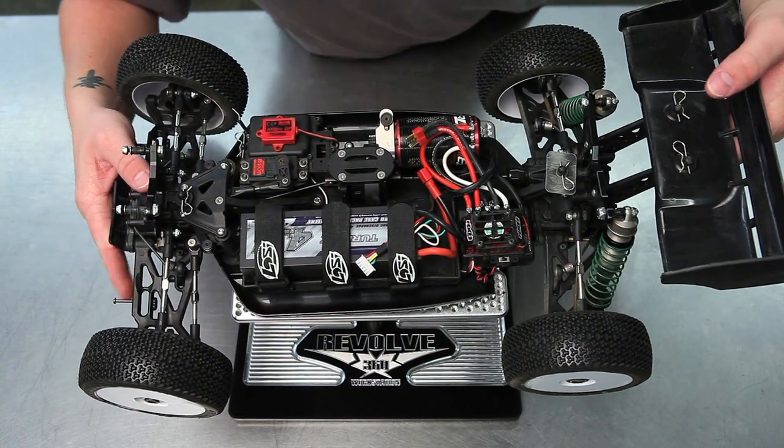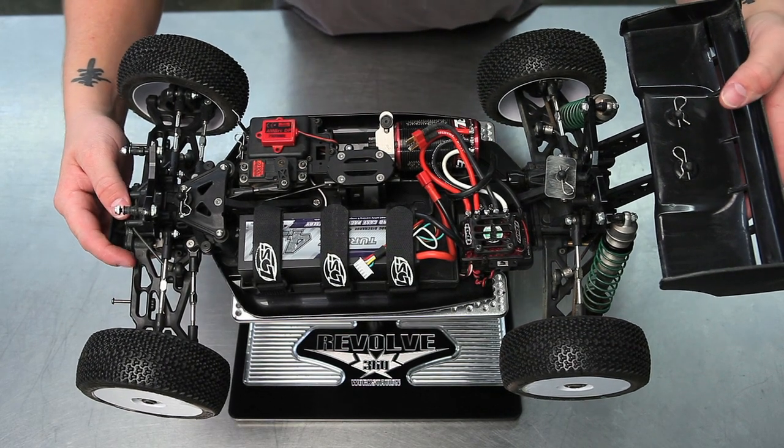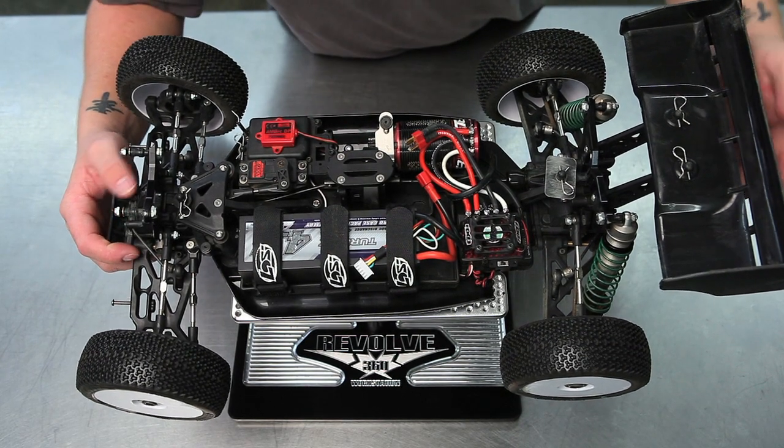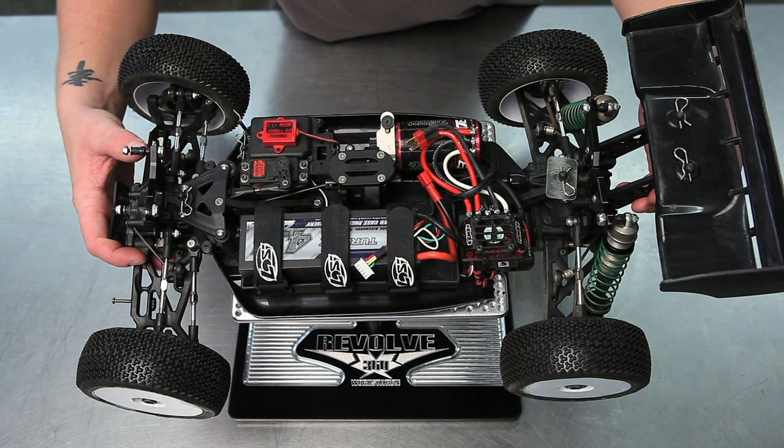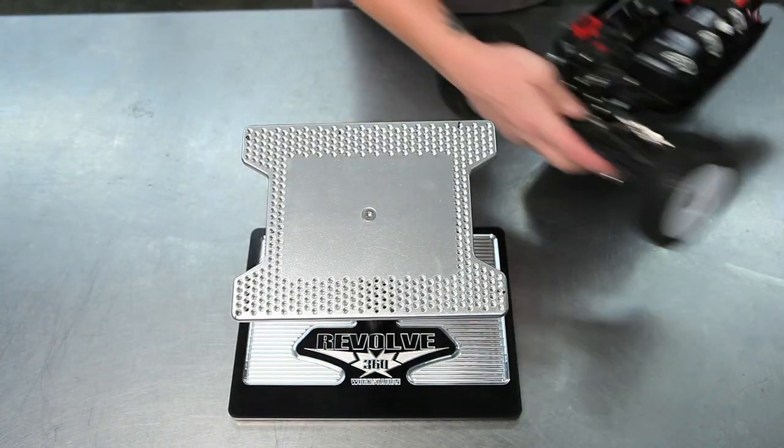First line the car up and decide where your locating tabs and your locking tabs will best fit your car. Every single hole is drilled and tapped, allowing you to place your tabs anywhere that will best fit your car.